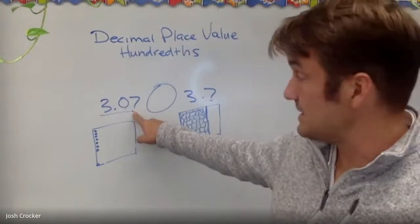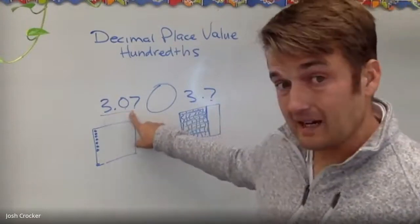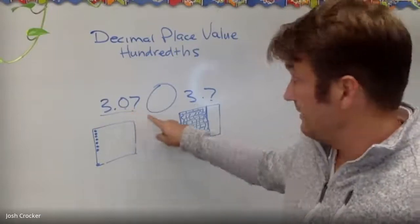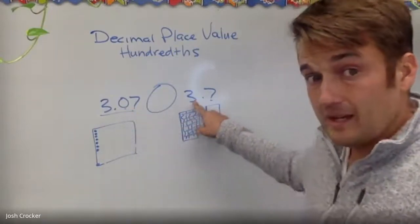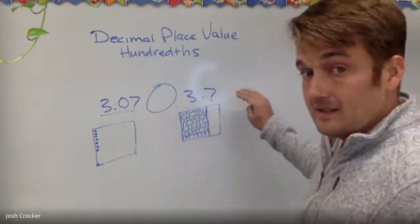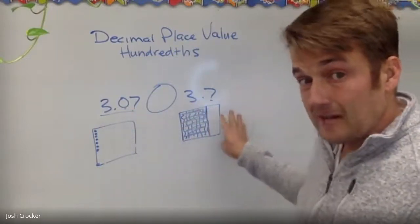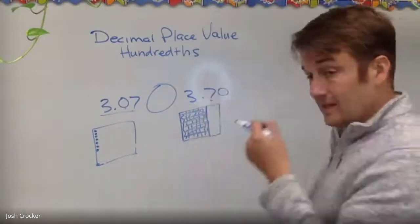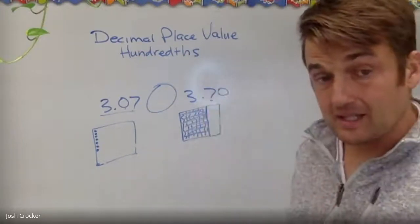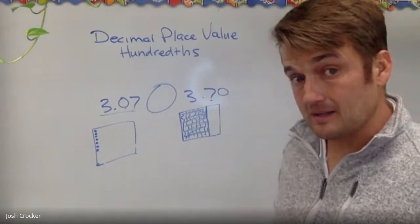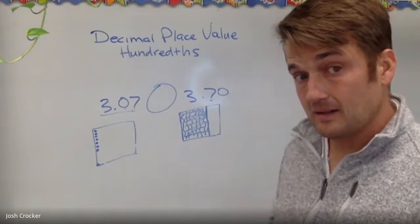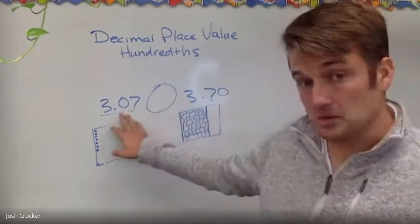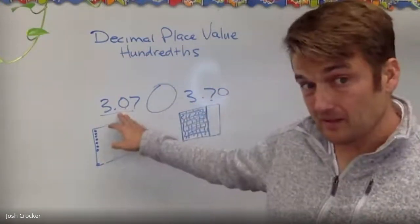So this is $3 and less than a dime — 7 pennies. This is $3 and 7 dimes, or we can think of it as 70 cents, 70 pennies. 70 is much more than 7.